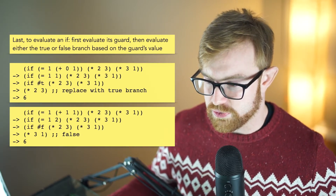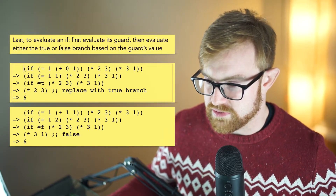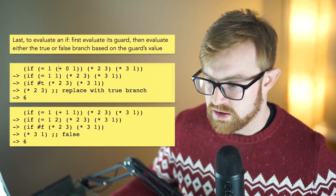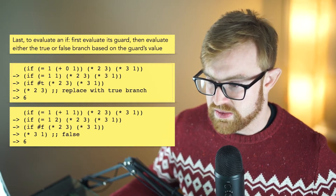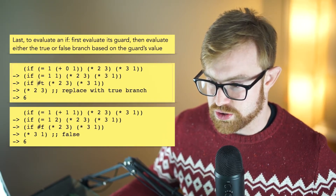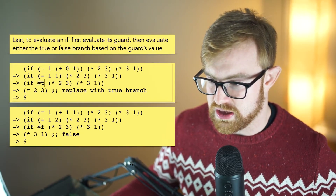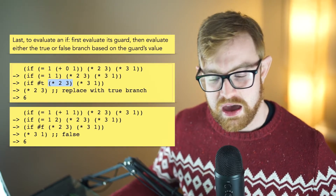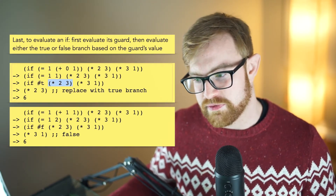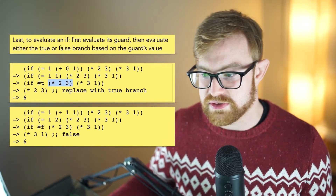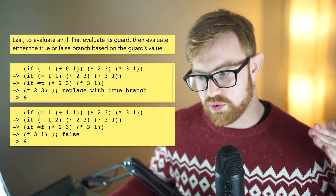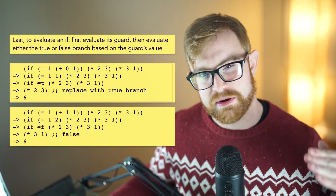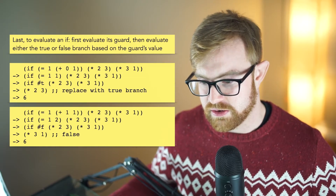So for example, right here we've got if of equals 1, 0, plus 1, which reduces to true. And so then we choose to evaluate 2 times 3. This is going to be very helpful later on — for example, if one of these branches threw an error, you would want to make sure that error didn't actually happen if it wasn't supposed to.